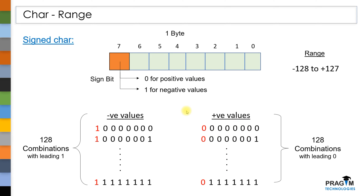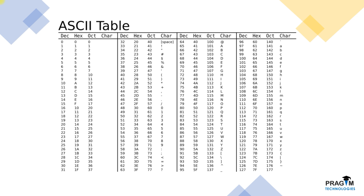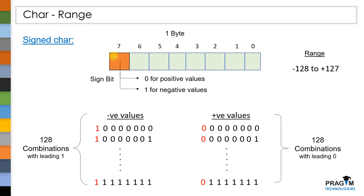If you understood the concept of char data type, there might be a question in your mind: we already know that character variables store the ASCII values of the characters given in the ASCII table. If you closely look at these ASCII values, there are no negative ASCII values. When there are no negative values, what is the necessity of reserving 1 bit to store the sign of the values?